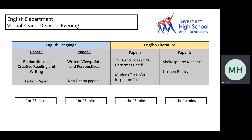So firstly, the GCSE overview. There are two courses that make up the English GCSE: English Language and English Literature. And there are two papers for each.